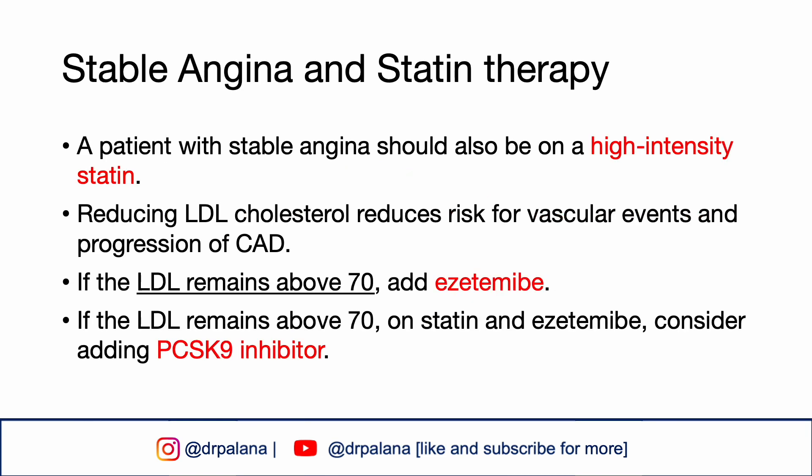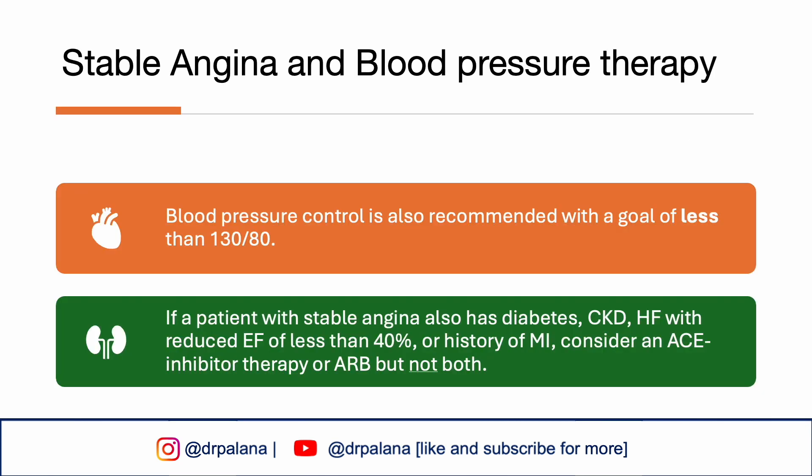A patient with stable angina should also be on a high-intensity statin, as reducing LDL cholesterol reduces the risk of vascular events and progression of CAD. If the LDL remains above 70, add ezetimibe. If the LDL remains above 70 while on statin and ezetimibe, consider adding a PCSK9 inhibitor. Blood pressure control is also recommended with a goal of less than 130 over 80. If a patient with stable angina also has diabetes, chronic kidney disease, heart failure with reduced ejection fraction of less than 40%, or history of MI, consider ACE inhibitor therapy or ARB — but not both.